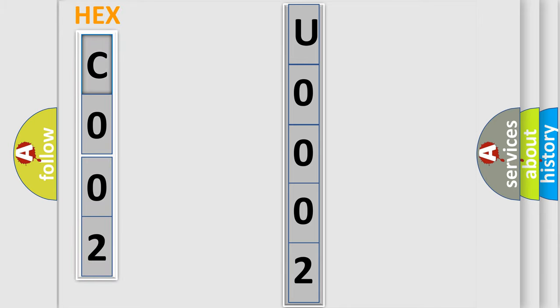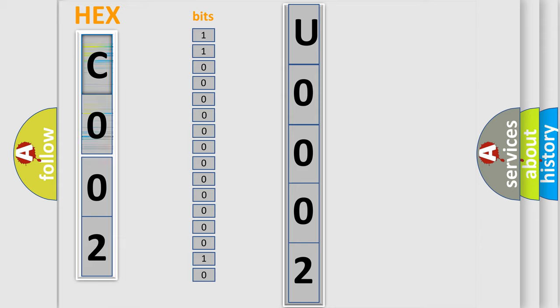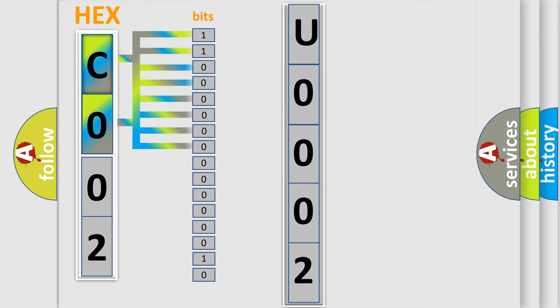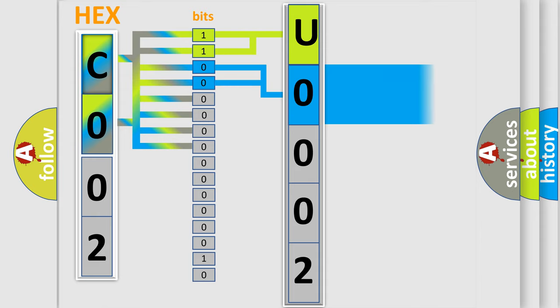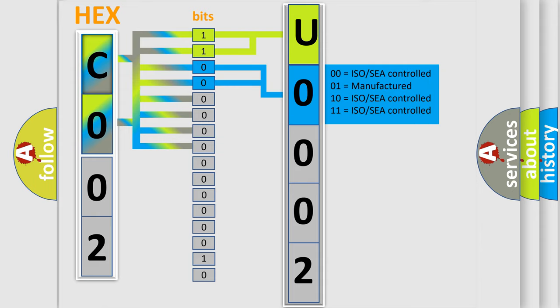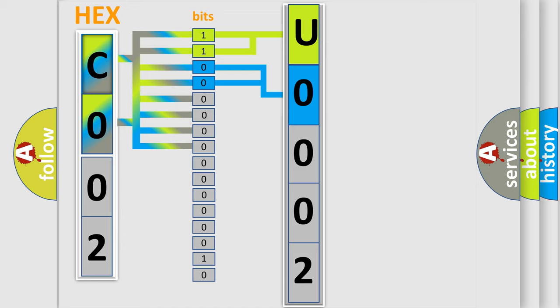The error code is split into two bytes consisting of 16 bits. One bit is the basic unit that each computer works with. The bit has two logical states: zero, low level, and one, high level. By combining the first two bits, the basic character of the error code is expressed. The next two bits determine the second character. The last bits of the first byte define the third character of the code.